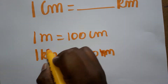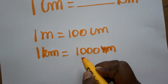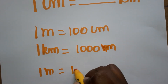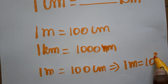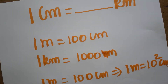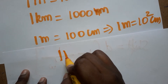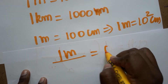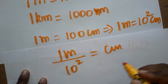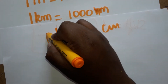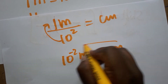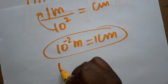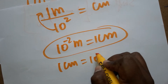First we'll see centimeter to meter. One meter is equal to one hundred centimeters, which we can write as 10 squared centimeters. Bringing 10 squared to the denominator, one meter equals one divided by 10 squared centimeters. So, from the denominator taken as a numerator: 10 power minus 2 meter is equal to one centimeter. Therefore, one centimeter is equal to 10 power minus 2 meter.